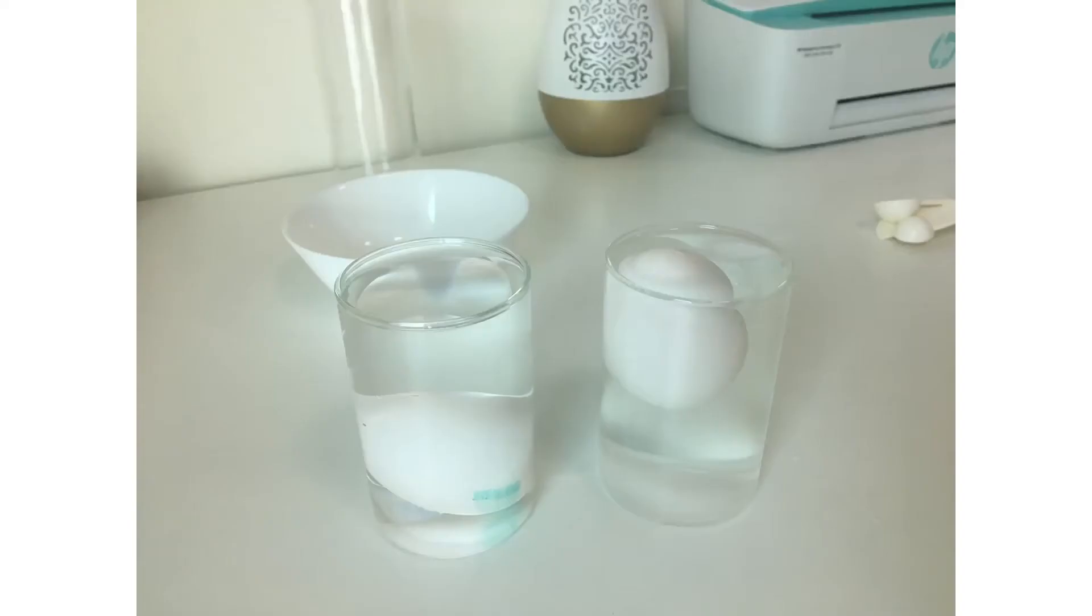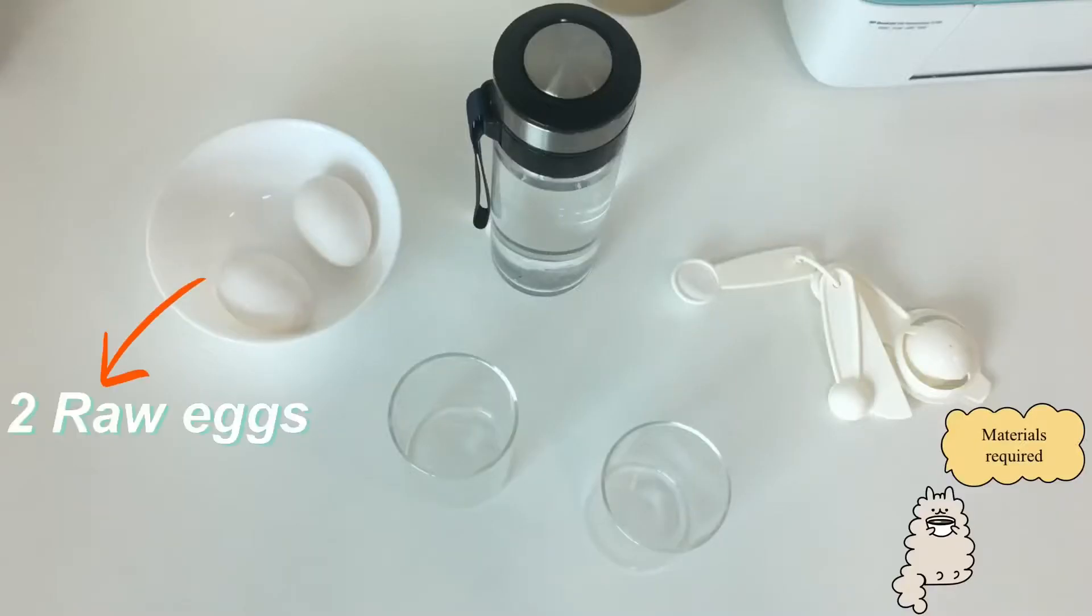Welcome to Kids Easy Learning. Today we are going to do the floating egg experiment. You need two raw eggs, two cups, transparent if possible, water, and a spoon of salt.